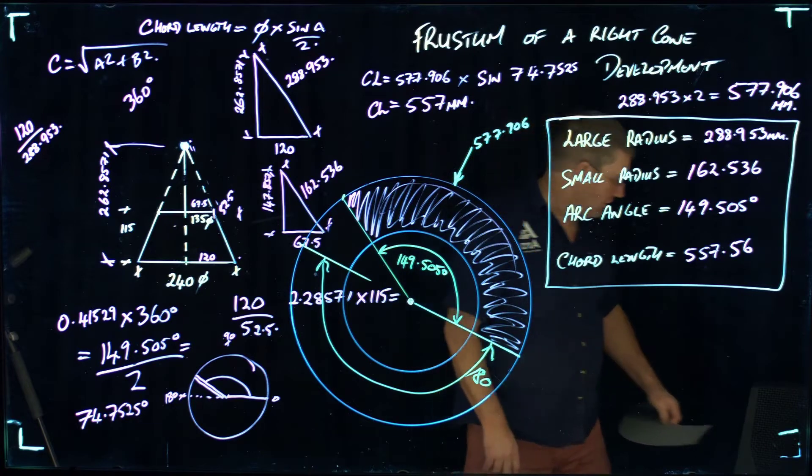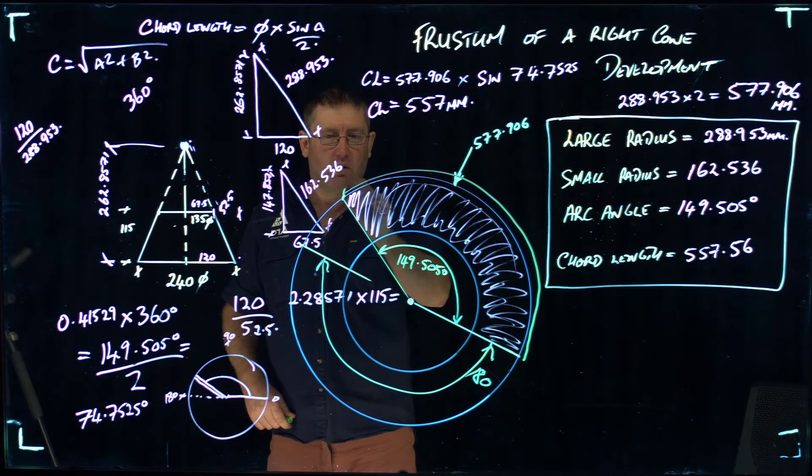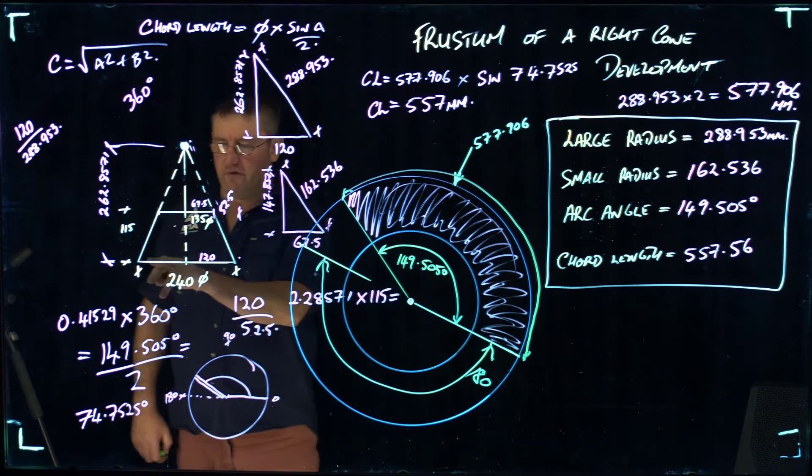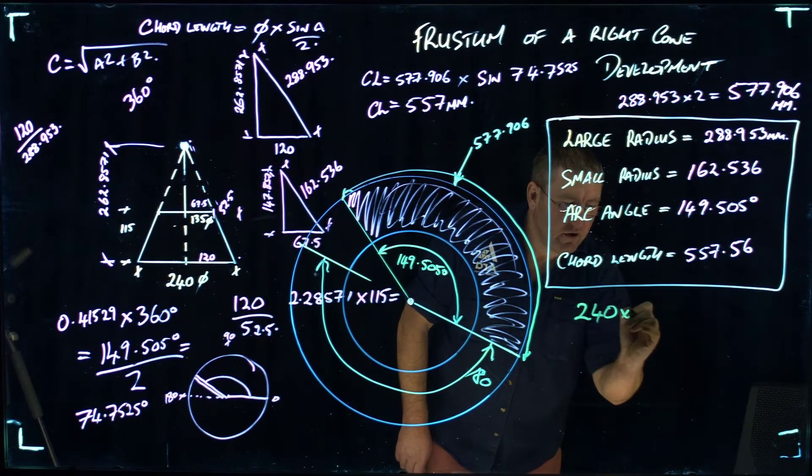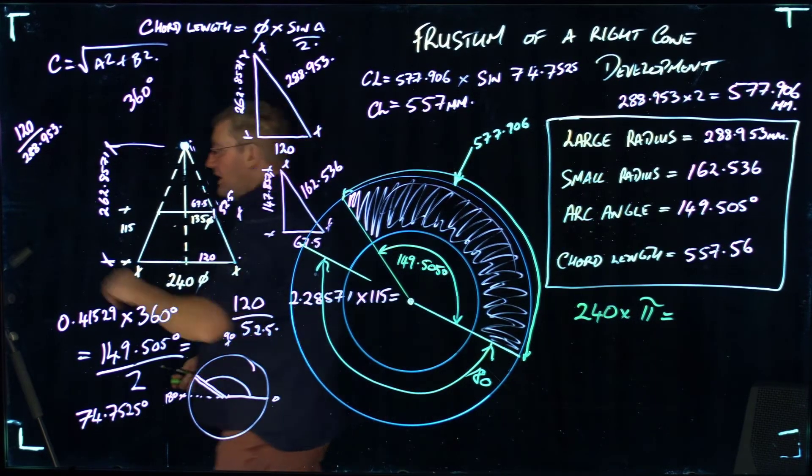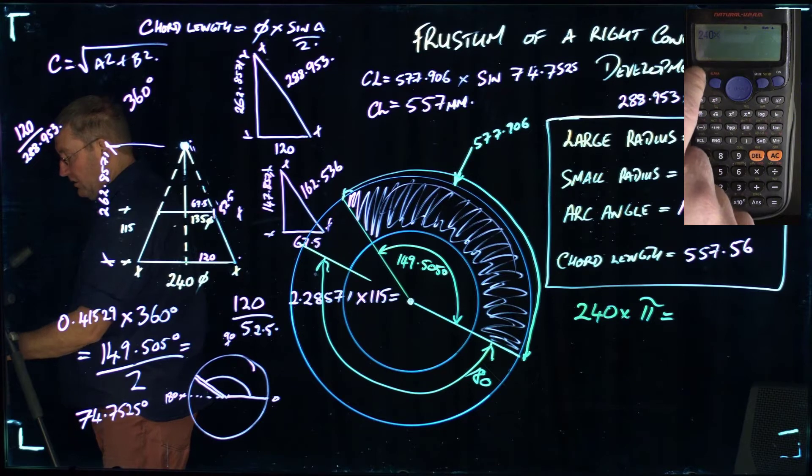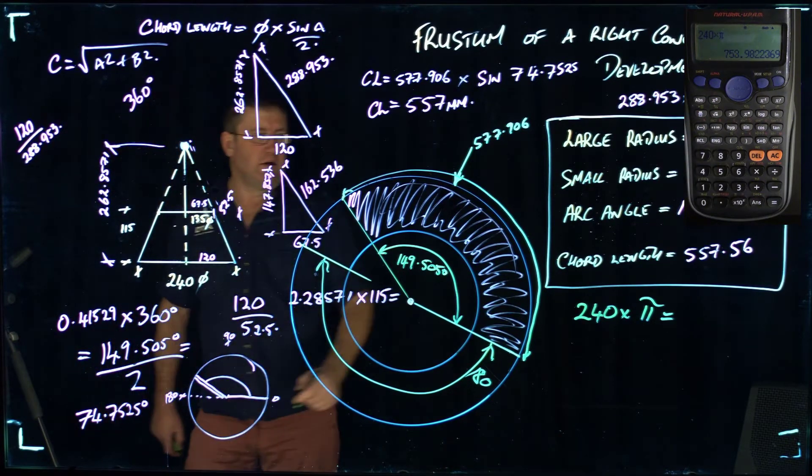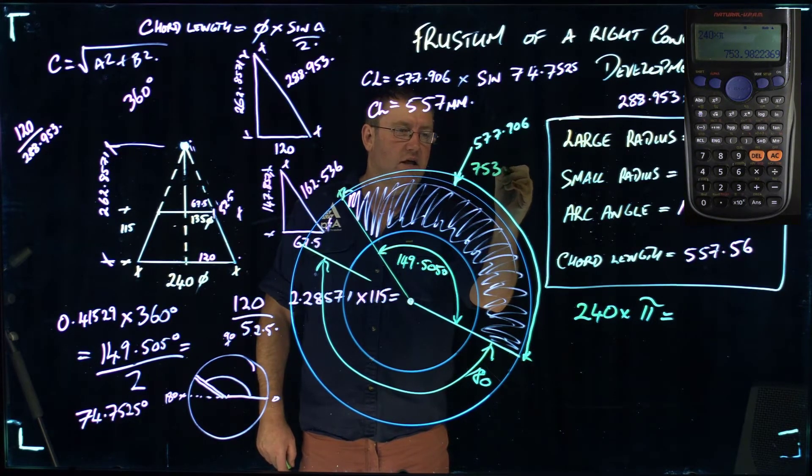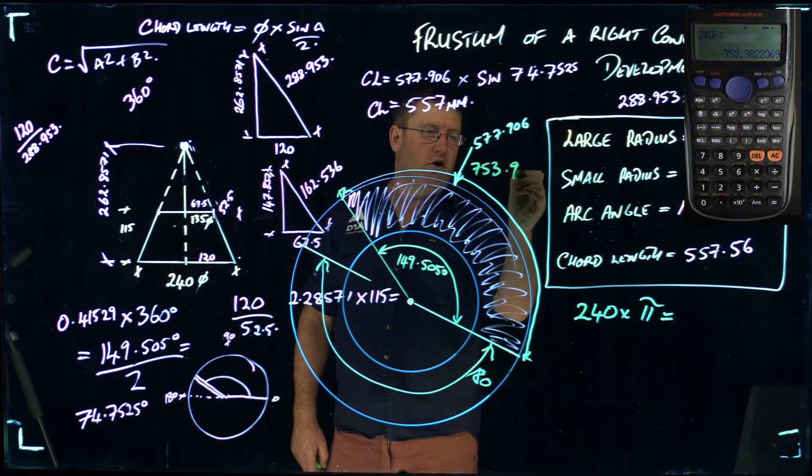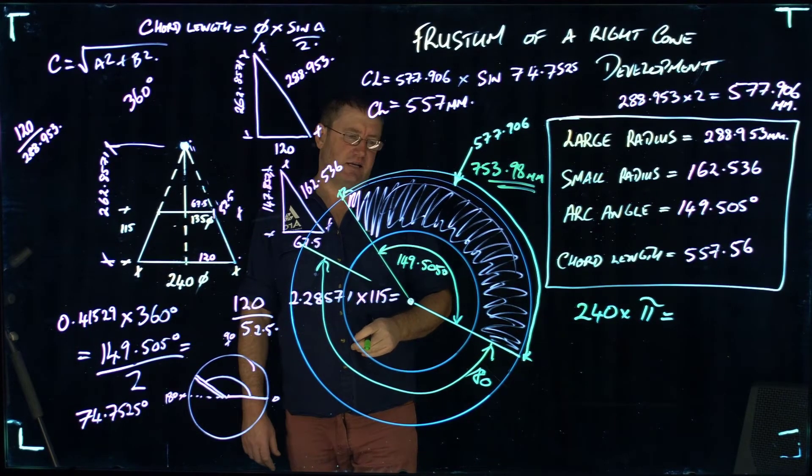This portion right around the outside edge here is the equivalent of the diameter 240 times pi. So 240 times pi equals. This distance from the start point here to the finish point is 753 millimeters, 753.98 millimeters to be really accurate. So that's how it would actually lay out.